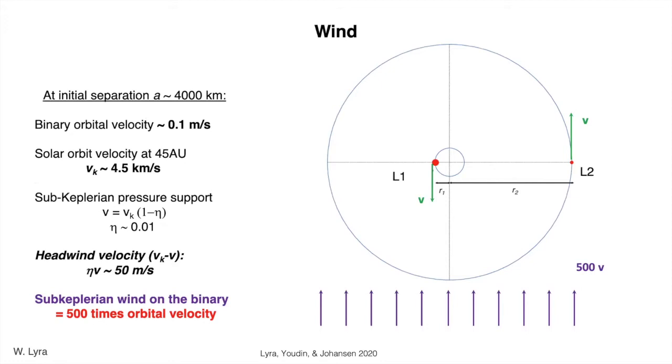The other mechanism we could consider would be the wind. Let's consider the evolution of the lobe due to the drag force that they experience from the wind in the nebula. This wind is because the central mass of the binary is orbiting the sun at the Keplerian rate. However,